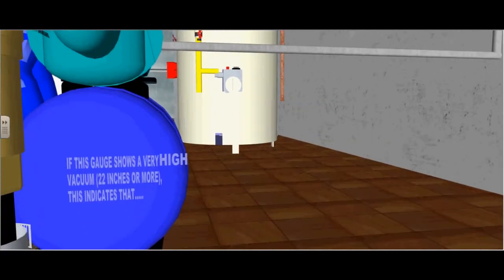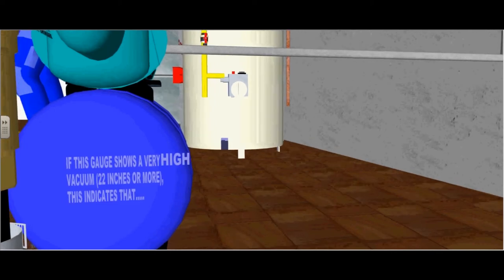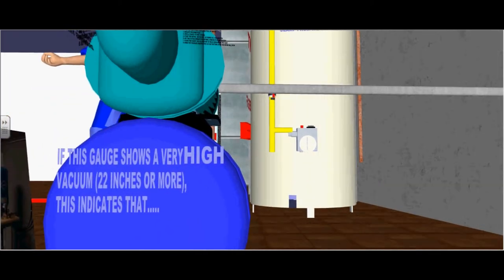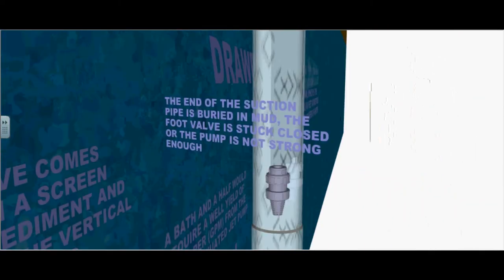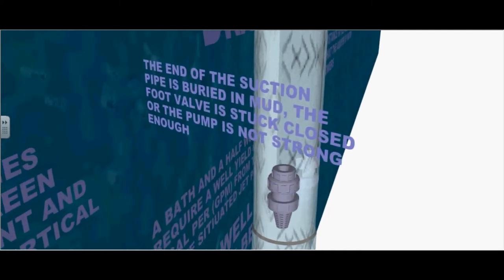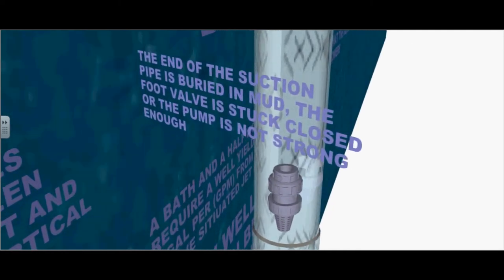If this gauge shows a very high vacuum of 22 inches or more, this will indicate that the end of the suction pipe is buried in mud, the foot valve is stuck closed, or the pump is not strong enough.